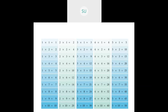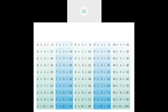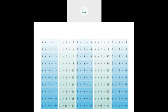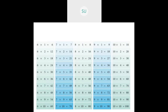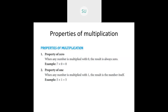Then we saw the different tables from 1 to 10. You get tables by multiplying two numbers and finding the product of those two numbers. Then we looked at the properties of multiplication.